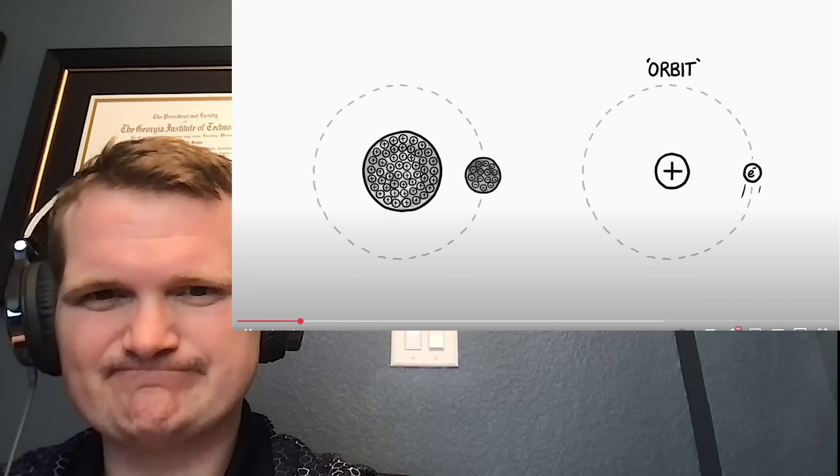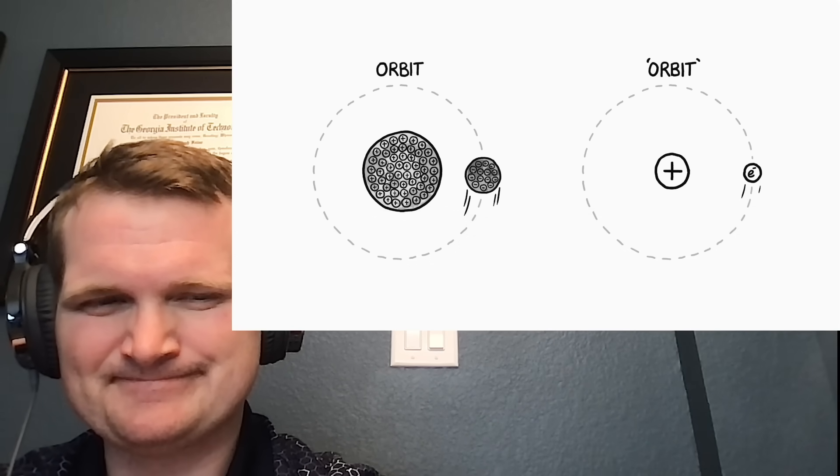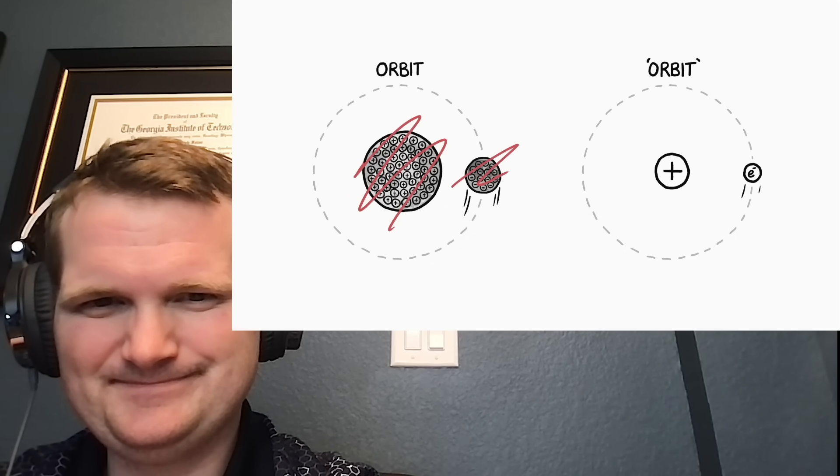On one level, it sort of makes sense. Electrons orbit protons and moons orbit planets. However, electron moons do not orbit proton planets.